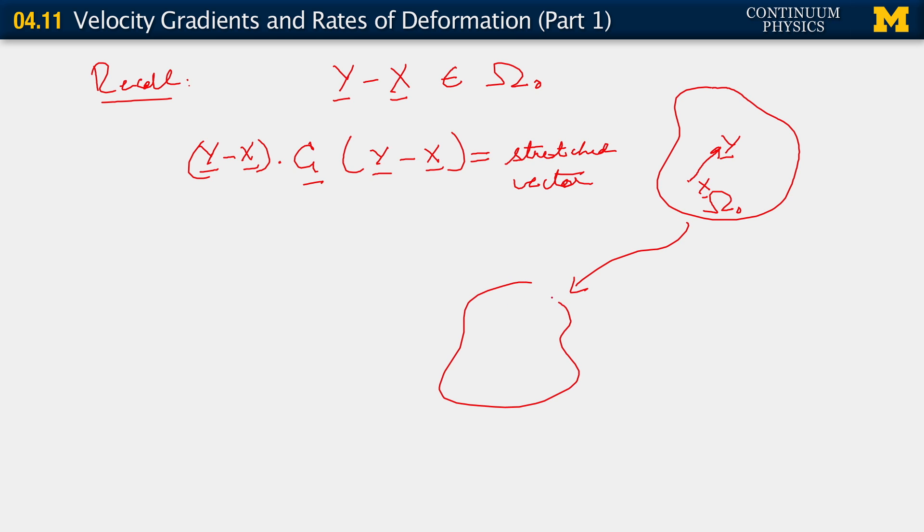Remember that if we have a vector, say Y minus X, belonging to omega naught, the reference configuration, and this simply means that we have points Y and X here, and so then the vector Y minus X is that vector. Doesn't look terribly like a vector because I drew it a little wavy, but it's meant to be a vector. So if Y minus X belongs to omega naught, we know that C acts on Y minus X. And then you can dot it on the left also with Y minus X, and then this gives us the stretched vector under the deformation.